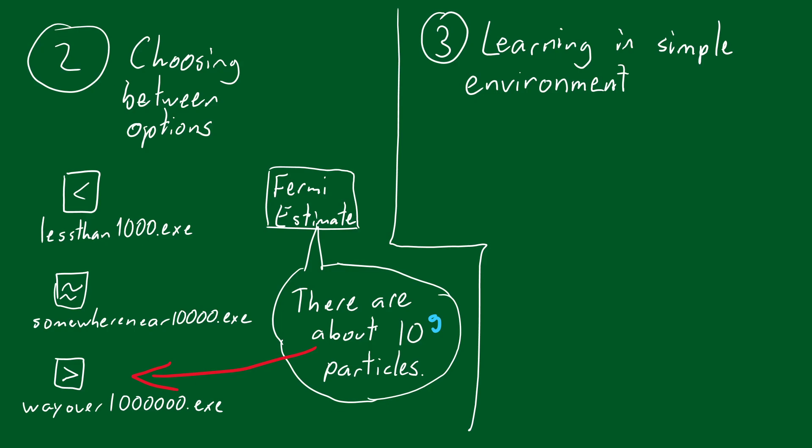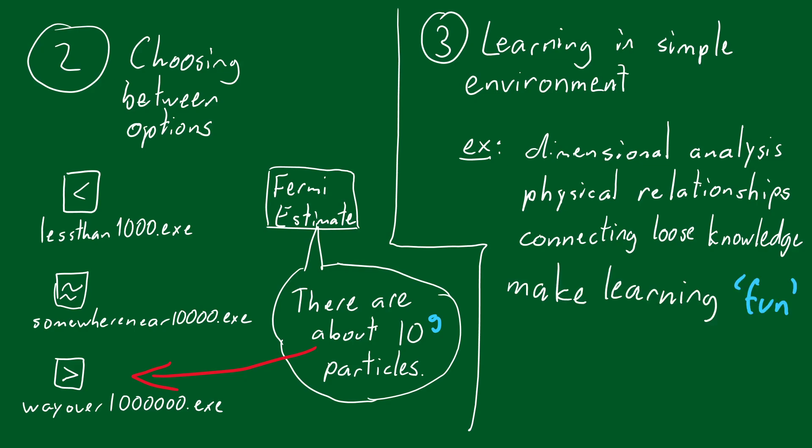Finally, Fermi estimates aid learning concepts that are easier to understand when there are few complex factors to worry about. Due to their simpler nature, they can help make dimensional analysis clearer, help grasp physical relationships, and give purpose to loose strings of knowledge we have. In a way, Fermi estimates make learning easier and more fun.